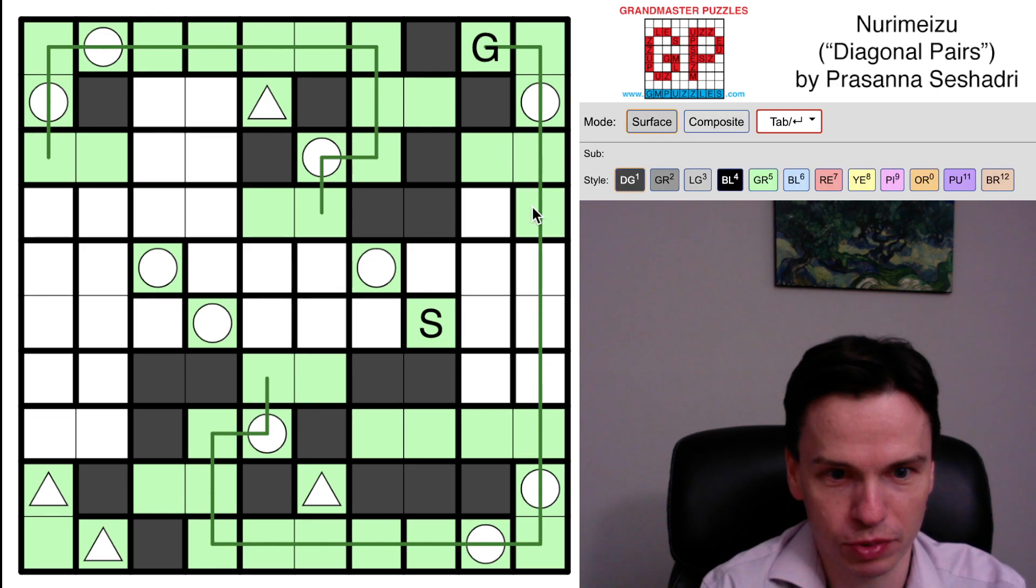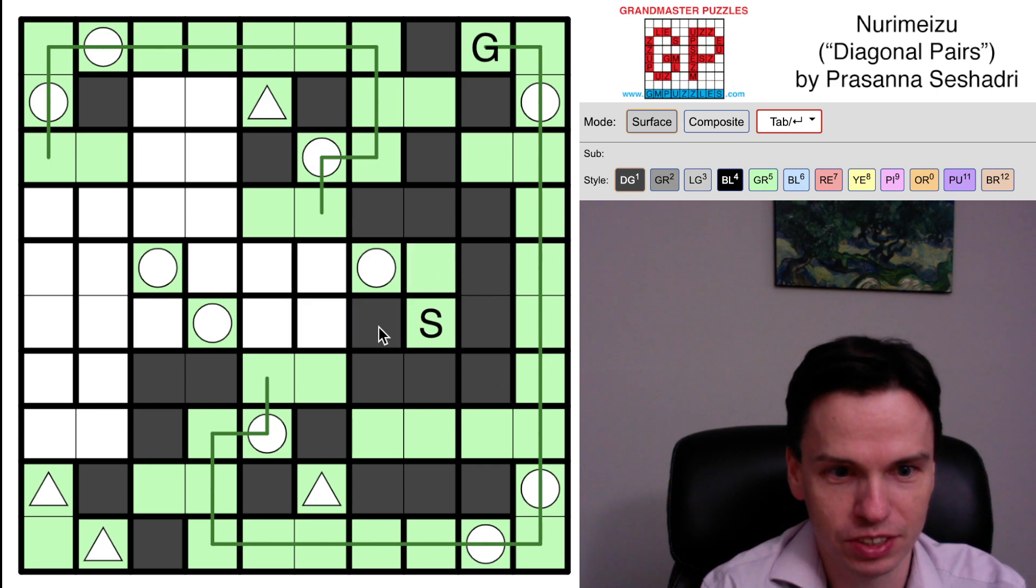In doing that, it's actually forced to come straight through those. Avoid this 2x2, avoid 2x2, avoid 2x2. In this case, avoid a shaded 2x2, so avoid an unshaded 2x2.